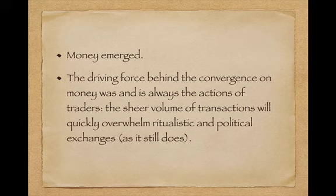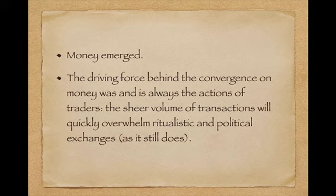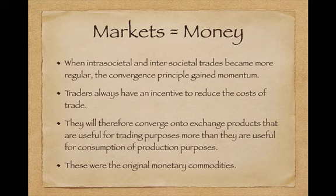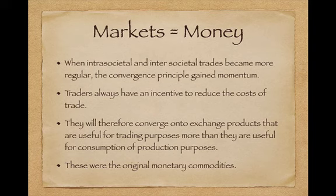Money emerged — it wasn't invented. The driving force behind the convergence onto monetary media was and always is the actions of traders. The sheer volume of transactions will quickly overwhelm ritualistic and political exchanges, as it still does. Markets mean money. Wherever there are markets, money will evolve or emerge. When inter-societal and intra-societal trades become more regular, the convergence principle gains momentum, and traders always have an incentive to reduce the cost of trade. They will therefore converge onto exchange products that are useful for trading purposes more than for consumption or production purposes — like the stones we saw: not very good to consume, not very good for production. But they would be used for exchange purposes. These were the original monetary commodities.